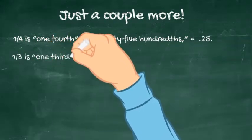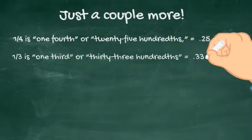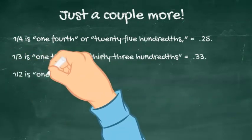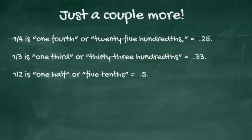1 over 3 is one third, or thirty-three hundredths, expressed as a decimal it's 0.33. 1 over 2 is one half, or 5 tenths, expressed as a decimal it's 0.5.